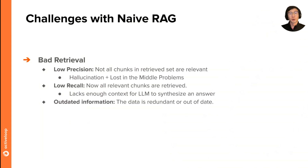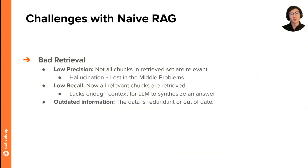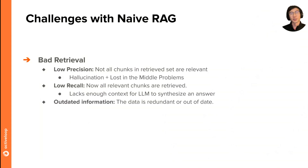There's also low recall, where not all the relevant chunks are actually retrieved, meaning you lack enough context for the LLM to actually synthesize an answer because some context needed to fully answer the question is missing. You might also run into cases where some of the retrieved data is out of date — a newer version with a newer timestamp should have been retrieved instead. These are just a few highlights.